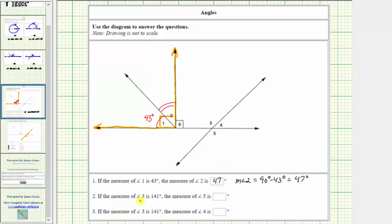Number two, the measure of angle 3 is 141 degrees. What is the measure of angle 5? So the measure of angle 3 is 141 degrees.